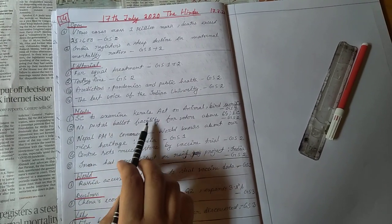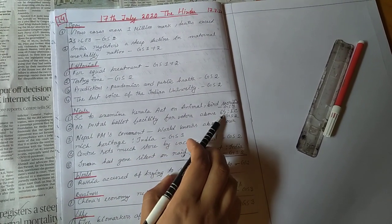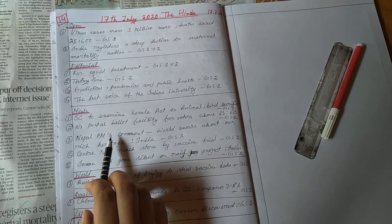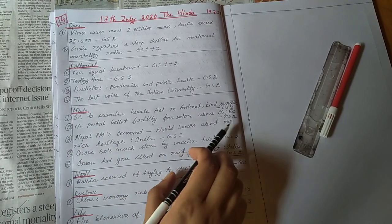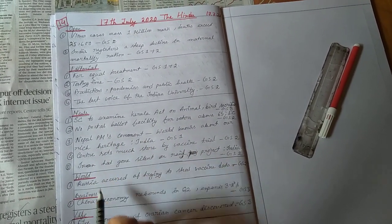Number 2, no postal ballot facility for voters above 65, election commission, GS paper 2. Nepal's Prime Minister's comment: world knows about our rich heritage, India, GS paper 1.